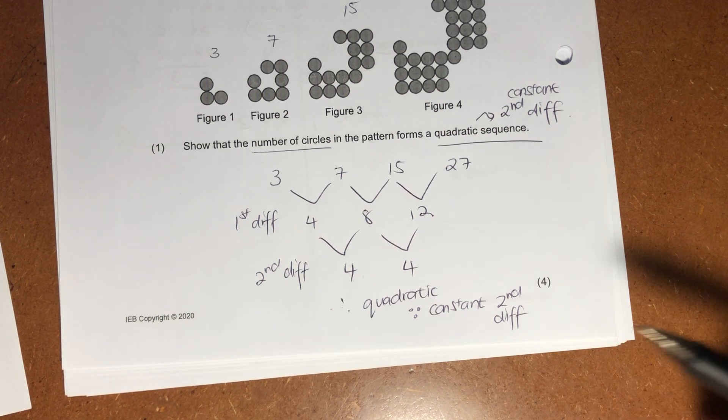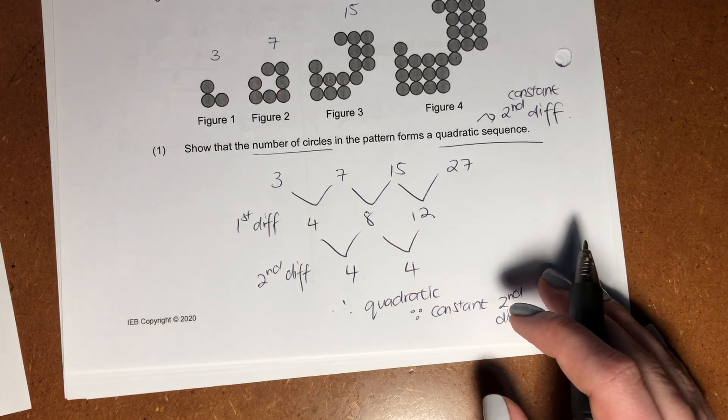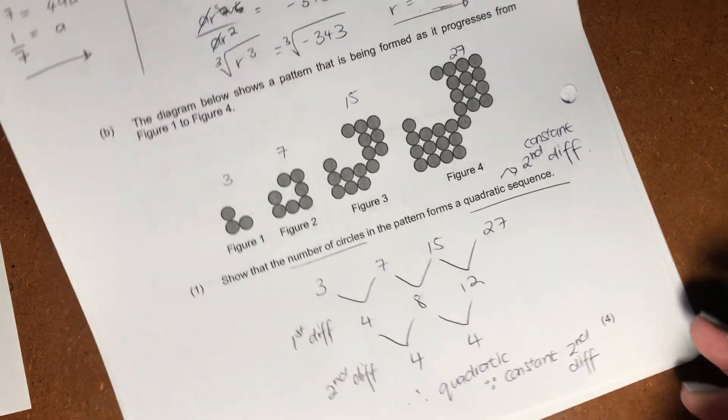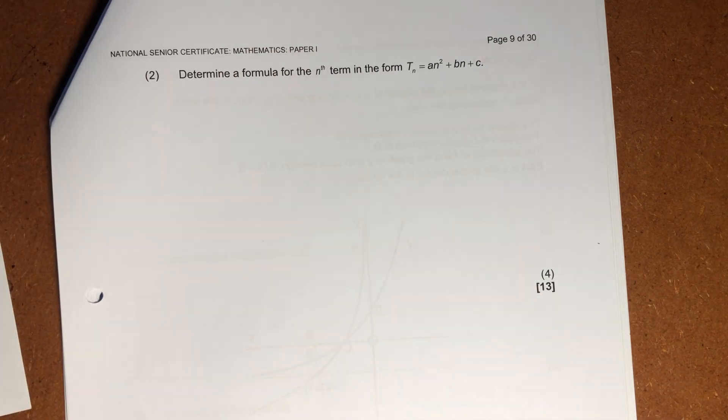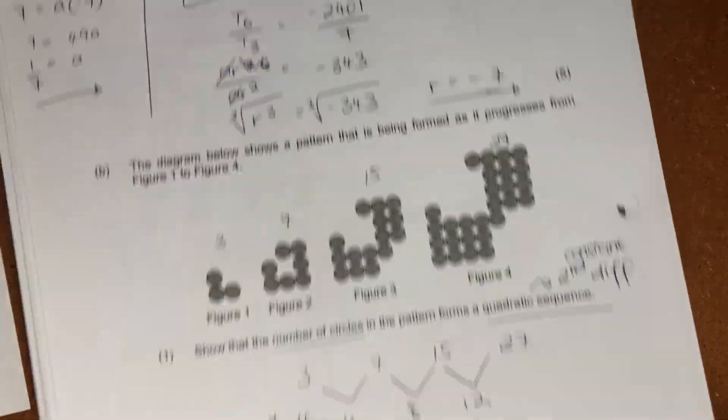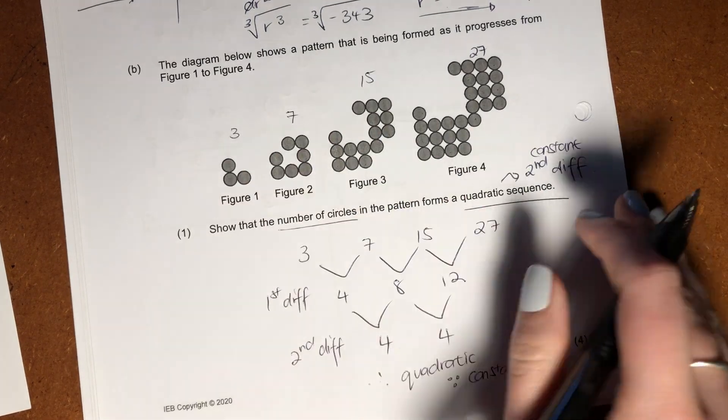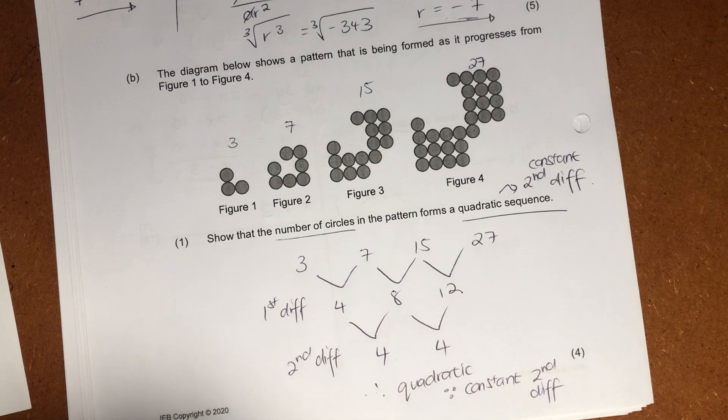So that's literally all they want you to show. You can get nice, easy four marks there. Right. Let's go on to the next page and see what they require of us there. So, the next page says, well, determine a formula for the nth term in the form of this quadratic. So, we're still looking at this lovely little sequence. So, don't be perturbed by it, but let's see what we can do.